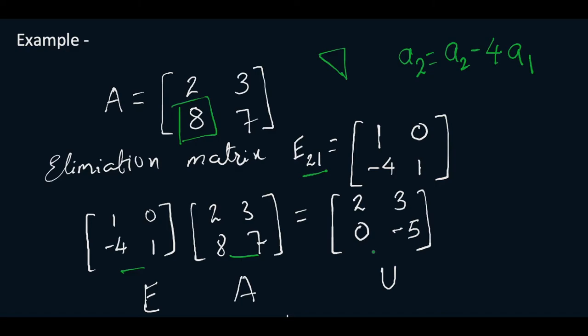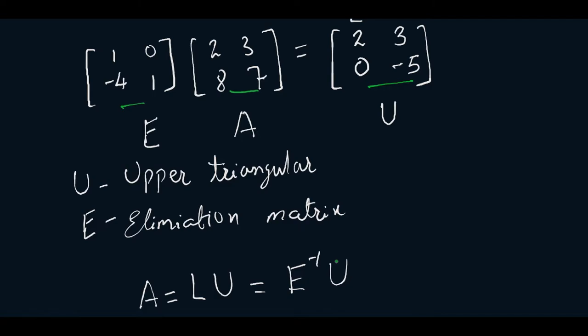So when you do the operations of E into A you will be getting U. Here U is our upper triangular matrix and E is the elimination matrix. So we get EA equals U.